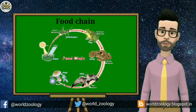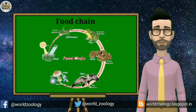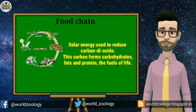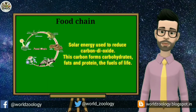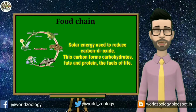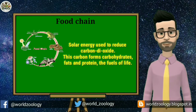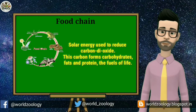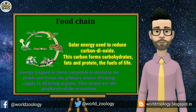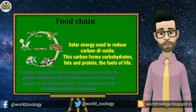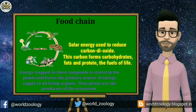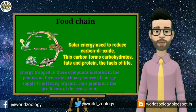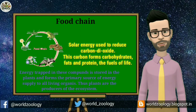The primary source of energy is the sun. Green plants alone are able to trap solar energy, which they use to reduce carbon dioxide. This carbon forms carbohydrates, fats and proteins — the fuels of life. Energy trapped in these compounds is stored in the plants and forms the primary source of energy supplied to all living organisms. Thus plants are the producers of the ecosystem.